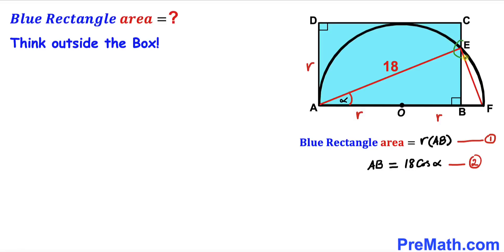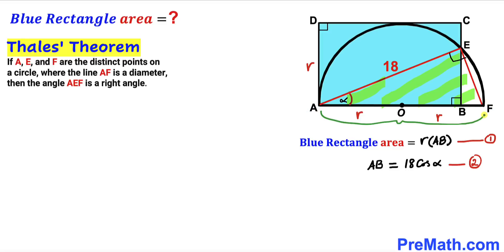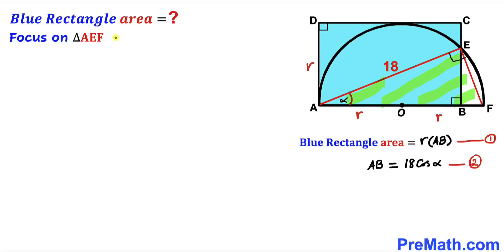Now we think outside the box: I've connected points E and F, giving us triangle AEF. Recall Thales' theorem: if A, E, and F are three distinct points on a circle where AF is the diameter, then angle AEF is a right angle — 90 degrees. Here, points A, E, and F lie on the semicircle and AF is the diameter, so angle AEF is 90 degrees.